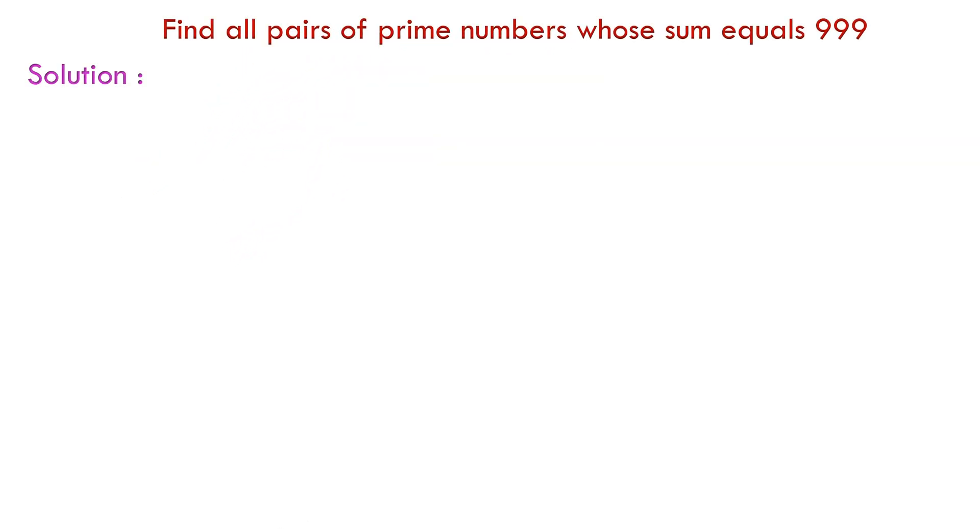All we need here is some clever logical reasoning. Here the given number 999 is an odd number. The question asks for pairs of two numbers whose sum equals 999. For the sum of two numbers to be odd, one of them must be odd and another even, isn't it?